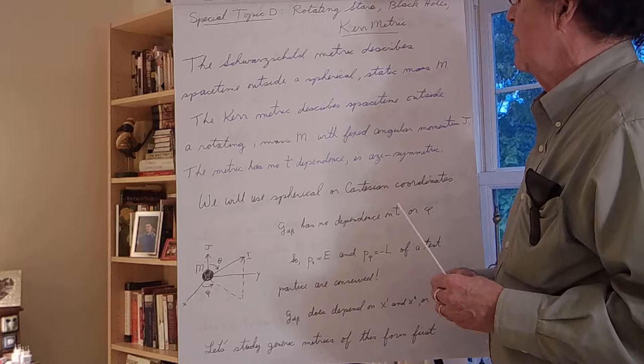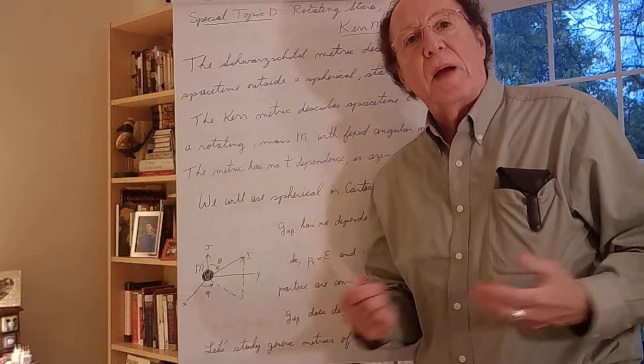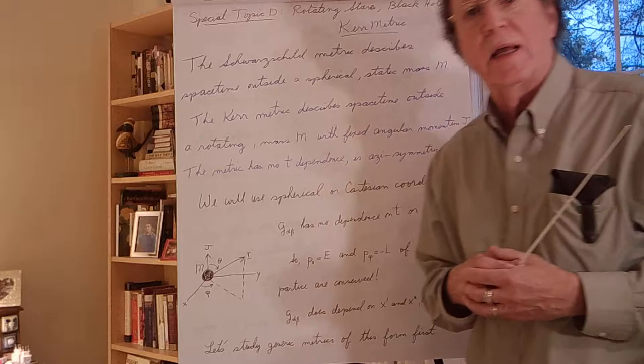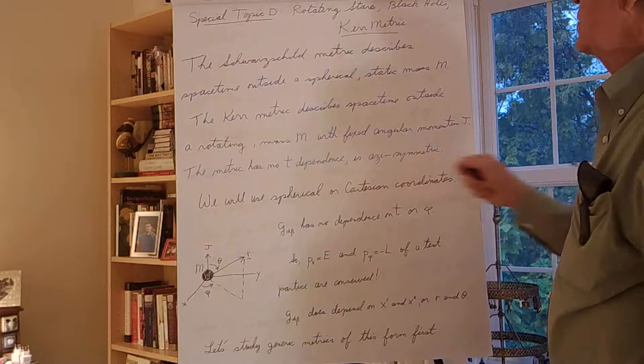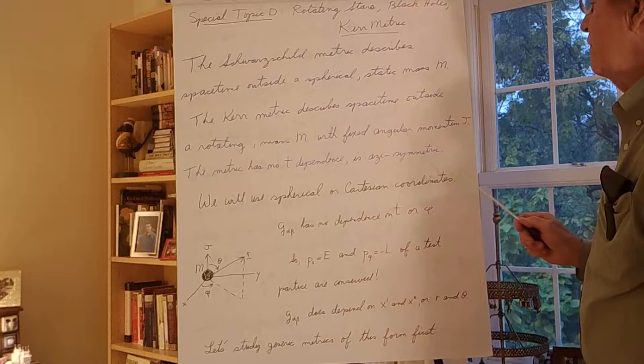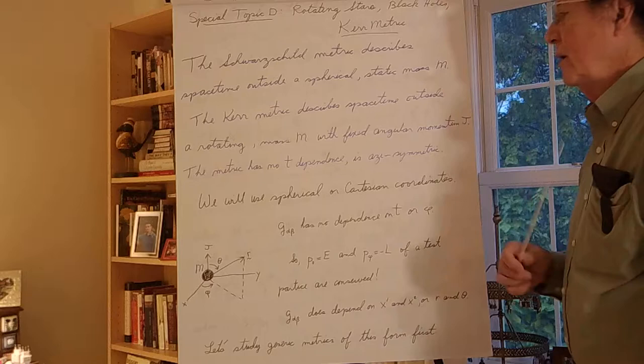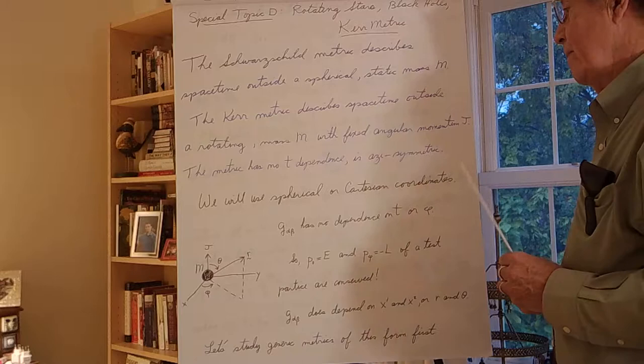First we'll discuss generic aspects of a metric that describes a rotating system, and then we'll look at the specifics of Roy Kerr's solution — the Kerr metric for a rotating star. The Kerr metric describes a spacetime outside a rotating mass M with fixed angular momentum J. It's a stationary situation with no time dependence, and it's axisymmetric — the system rotates with a constant angular velocity. We'll use spherical or Cartesian coordinates to set up the metric.